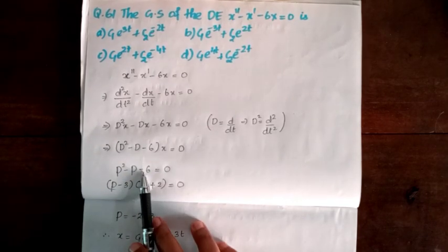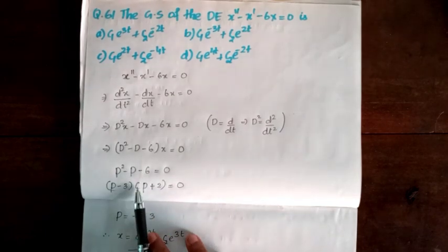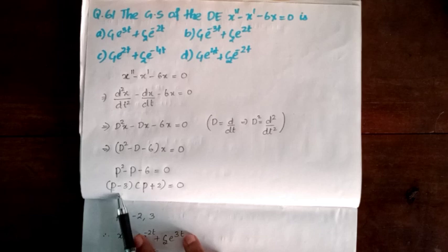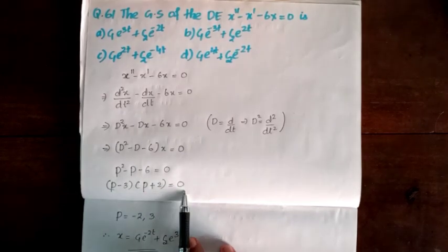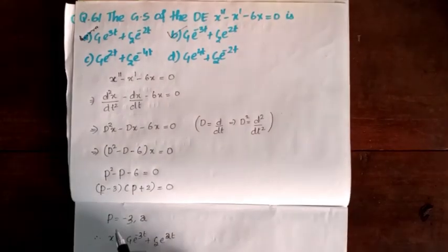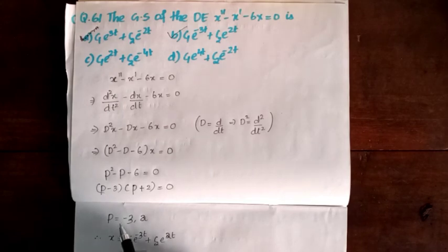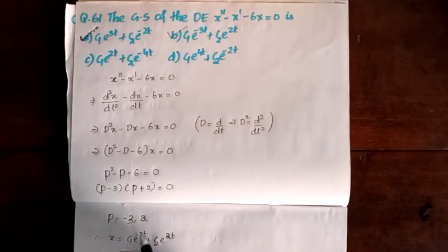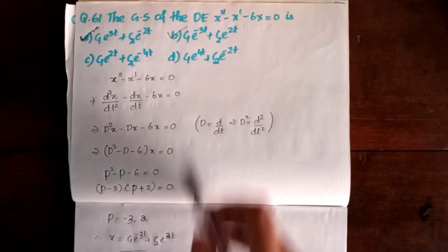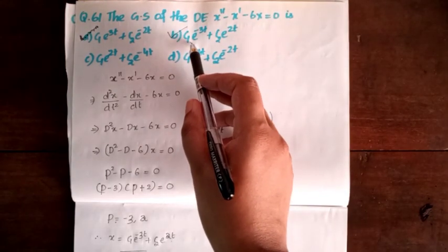This equation factors as (p minus 3)(p plus 2) equal to 0. So the roots are p equal to 3 and p equal to minus 2. Therefore, the general solution is x equal to c₁e^(3t) plus c₂e^(-2t). Option B is correct.